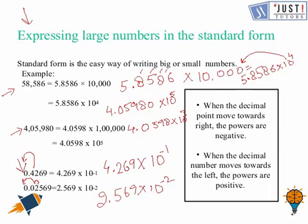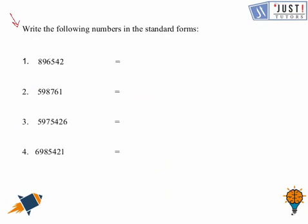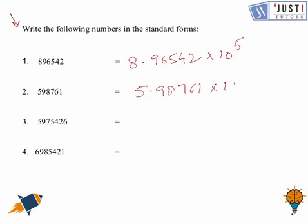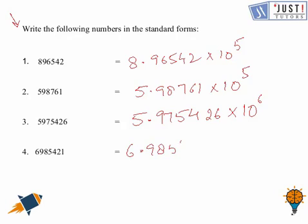Here are some questions for you to try. You can pause the video. The answer for the first question would be 8.96542 times ten raised to the power five. The next is 5.98761 times ten raised to the power five. Then it is 5.975426 times ten raised to the power six. The last one is 6.985421 times ten to the power six.